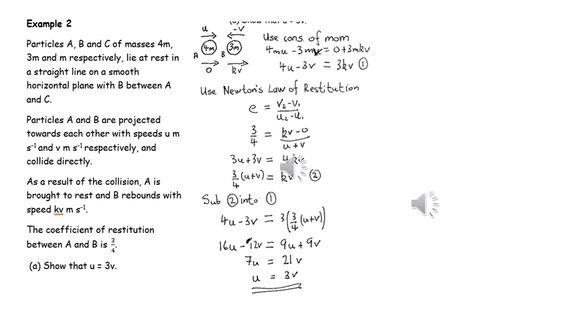This is quite an algebraic question, but the mechanics concepts involved are just the same as in previous examples. So we can look at the collision between A and B and apply Newton's experimental law or Newton's law of restitution, and we can also apply conservation of linear momentum. This gives us two equations with two unknowns and will lead us to the fact that u does equal 3v.